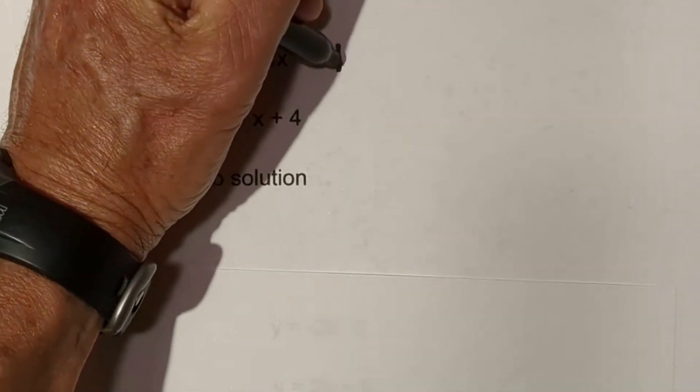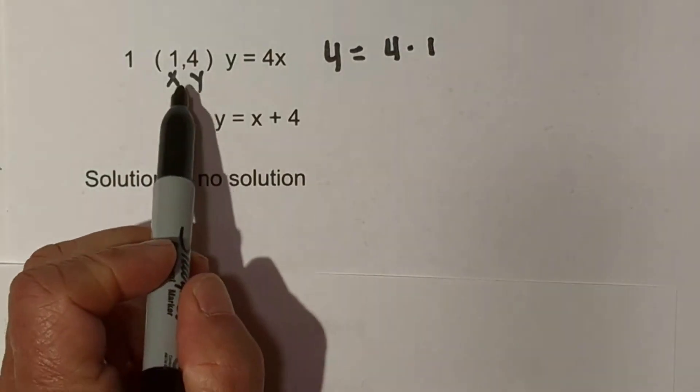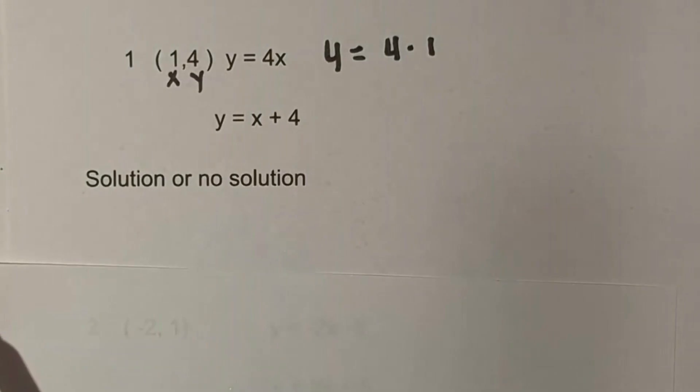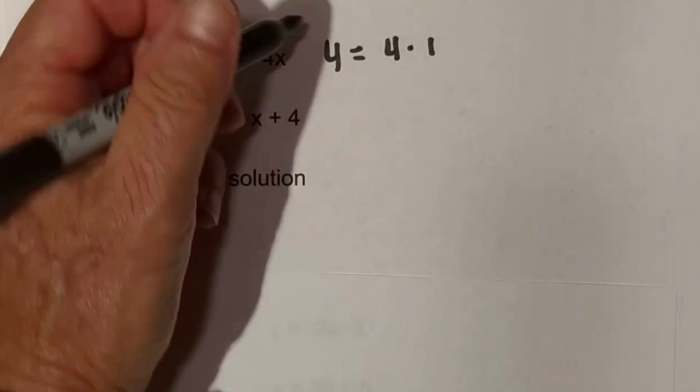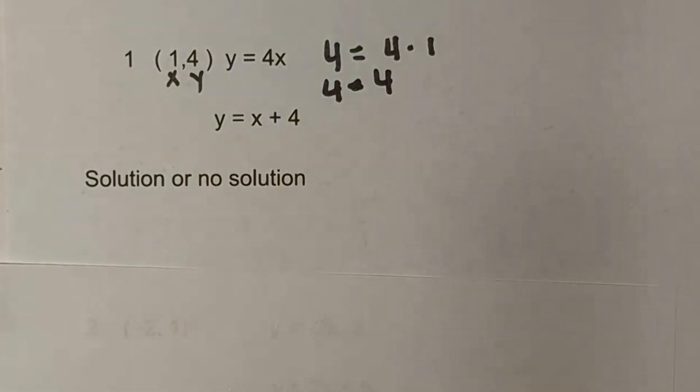For y it's going to become 4 equals 4 times 1, because the 1 is the x and the 4 is the y. Then we just solve: 4 is equal to 4 times 1, which is 4.